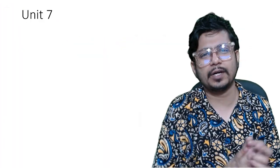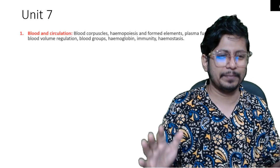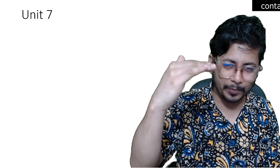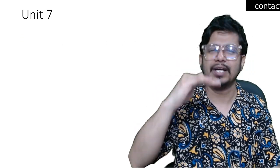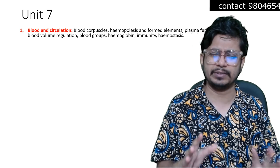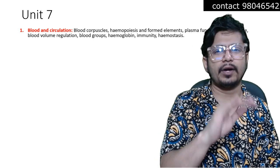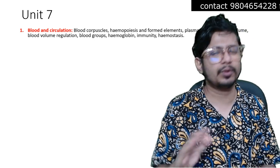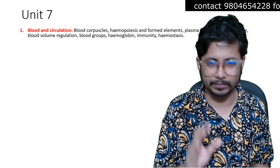Let's first look at the CSIR-NET Life Science Unit 7 syllabus. We have a color grading system: green means most important, yellow means moderately important, and red means least important. Starting with blood and circulation — this topic is least important. They don't ask many questions from this topic, though they can ask about arteries and veins, the valves that are present or absent, and their internal structures.